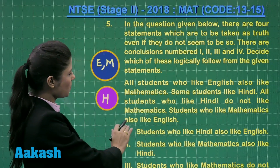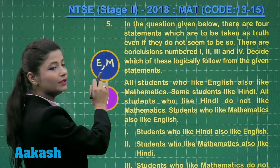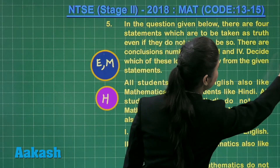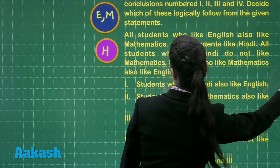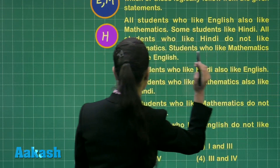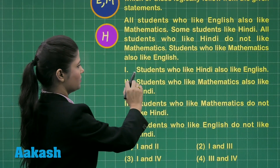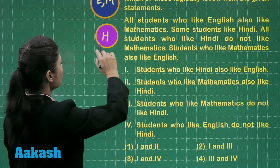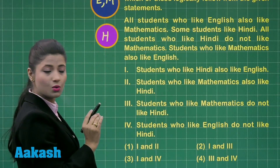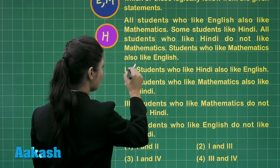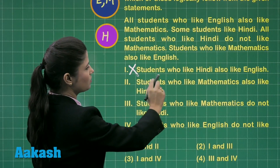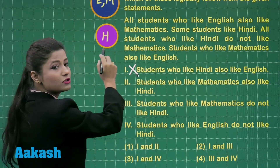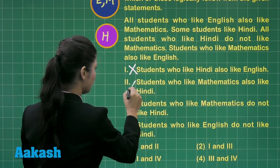Students who like mathematics also like English, which is quite clear from this figure. Now let us observe the statements which are given as conclusions. The first conclusion is: students who like Hindi also like English. But here we have a different set of students who are liking Hindi, so this is not correct. Then: students who like mathematics also like Hindi — this is also not following the given statement.